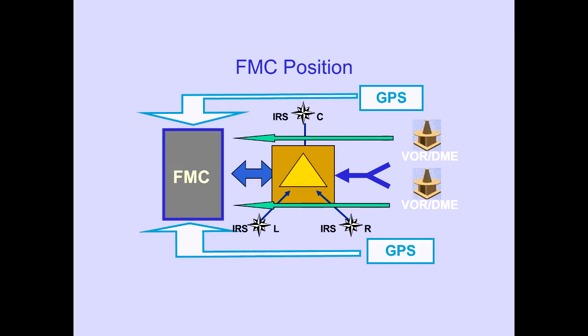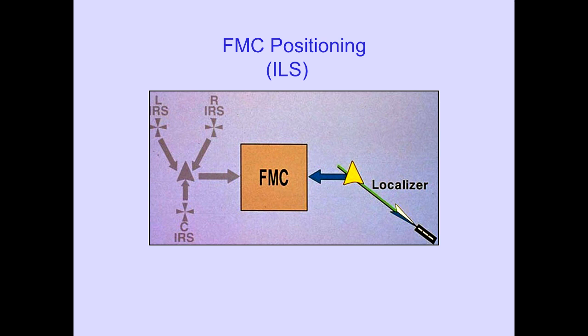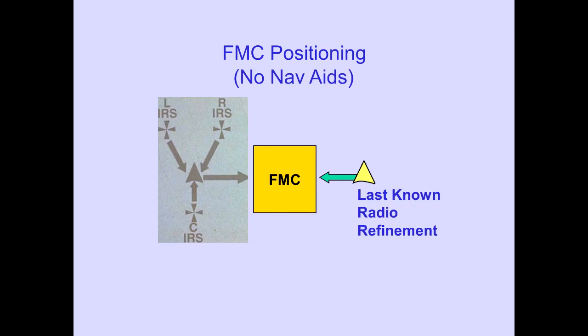The FMC also uses two DME signals to further refine the FMC position. When only one DME is available, the FMC will use a VOR bearing with the DME distance to further refine the FMC position. During an ILS approach, the FMC will use the ILS localizer to further refine the FMC position. When no navigation aids are available, the FMC continues to use radio refinements for position.